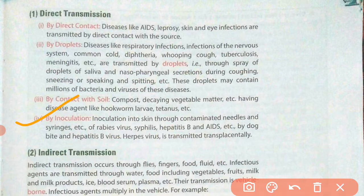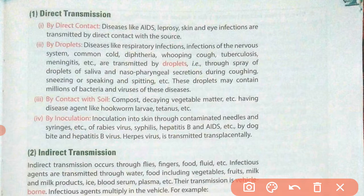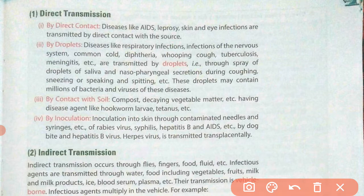The fourth method is by inoculation — when something enters your body through your skin. For example, when you are injected with drugs or any substance, the needle pierces your skin. If that syringe or needle is unhygienic or contaminated with germs, those germs can enter your body. The viruses of rabies, syphilis, hepatitis B, and AIDS can enter the body through contaminated and unhygienic syringes. We must always use hygienic and new syringes for injections.